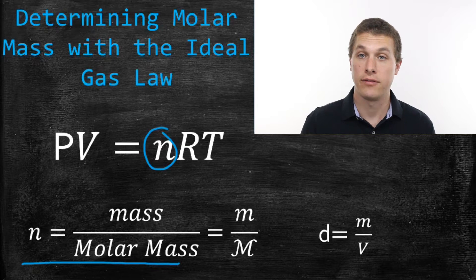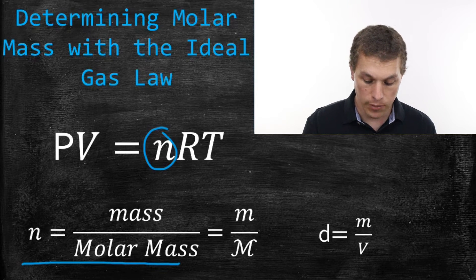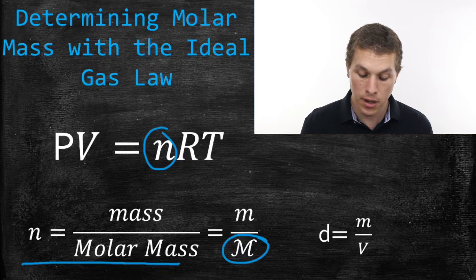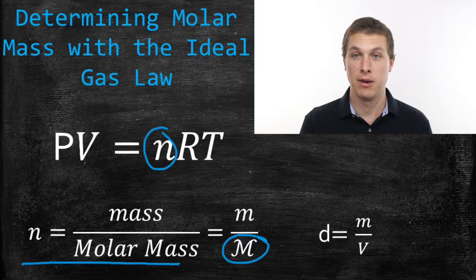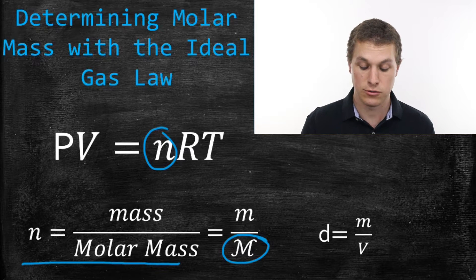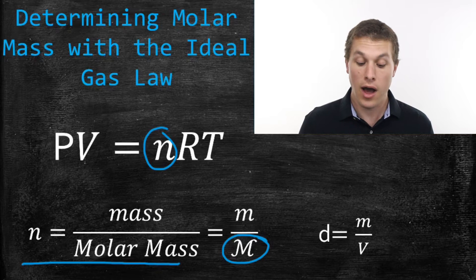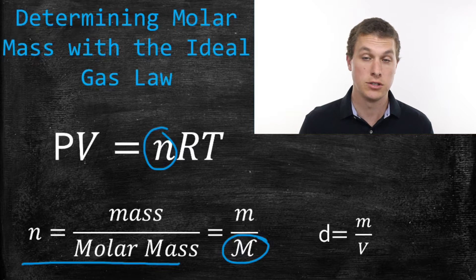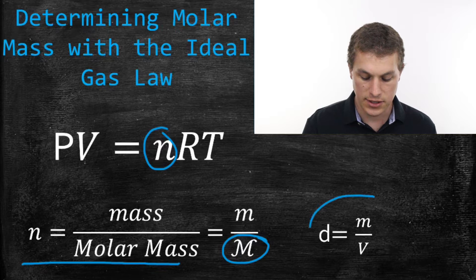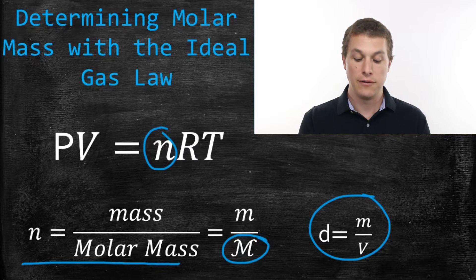For the purposes of this video, and often in textbooks, you'll see molar mass written with a script M — a kind of funny M — because you don't want to use the same M that stands for mass. So we use this big script M to stand for molar mass. The other equation we're going to use in conjunction with the ideal gas law is our density equation: density equals mass over volume.